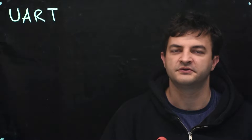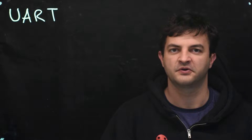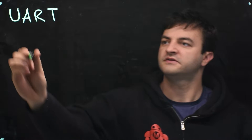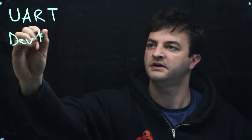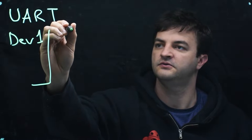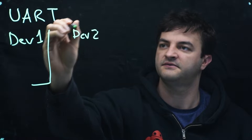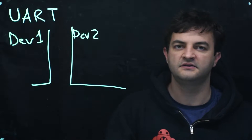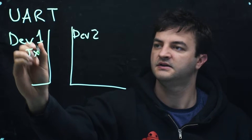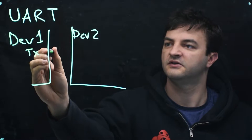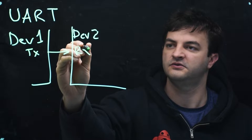Let's talk about the UART, the Universal Asynchronous Receive and Transmit Digital Communication Protocol. The way UART works is that we have two devices, device one and device two, and they each have at least two communication pins. The transmit pin on one sends out the digital ones and zeros and is connected to the receive pin of device two.